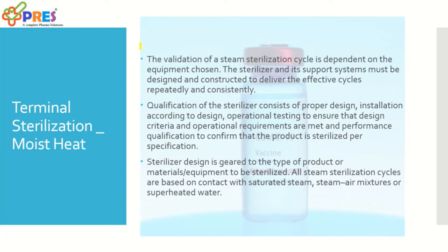The validation of a steam sterilization cycle depends on the equipment chosen. The sterilizer and its support system must be designed and constructed to deliver effective cycles repeatedly and consistently. Qualifications of the sterilizer consist of proper design installation, operational testing to ensure design criteria and operational requirements are met, and performance qualifications to confirm the product is sterilized as per specification. First, understand your product, understand the requirements, and design the equipment to fulfill those requirements.